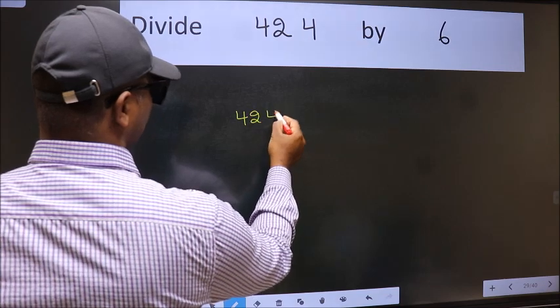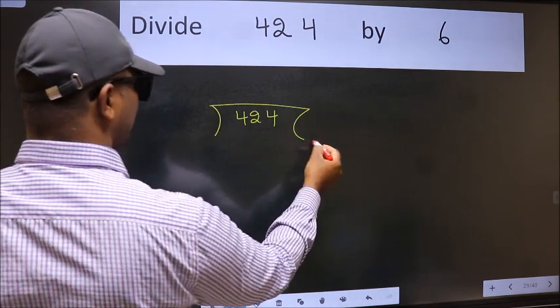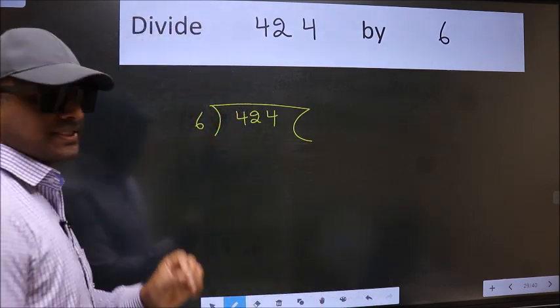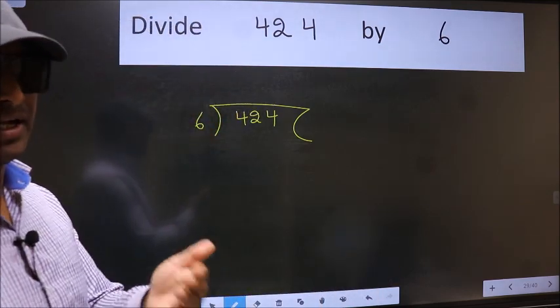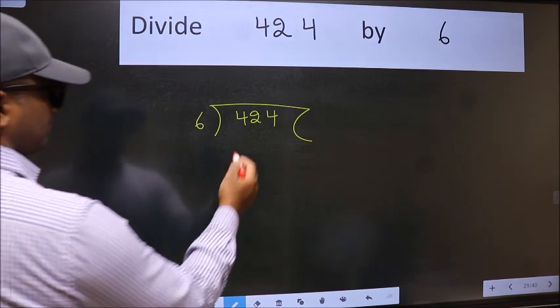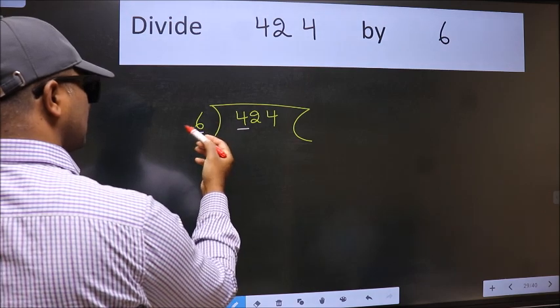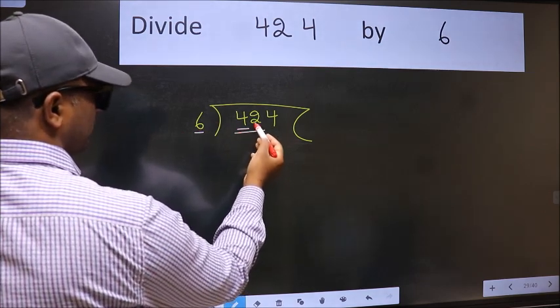424 and 6 here. This is your step 1. Next, here we have 4 and here 6. 4 is smaller than 6, so take two numbers: 42.